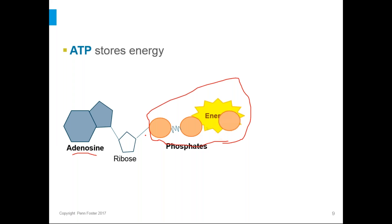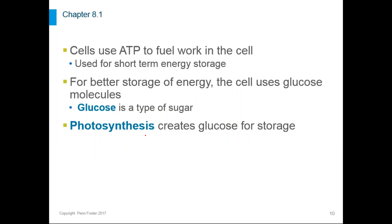What is ATP used for? Basically everything the cell does — cells use ATP to fuel transport across cell membranes, make muscle cells move, build proteins, build other cell parts, and many other jobs. Anything the cell needs energy to do, it's probably using ATP. So ATP is used for working energy; it's short-term energy storage. The cell does not use ATP for long-term energy storage because it's not very stable.